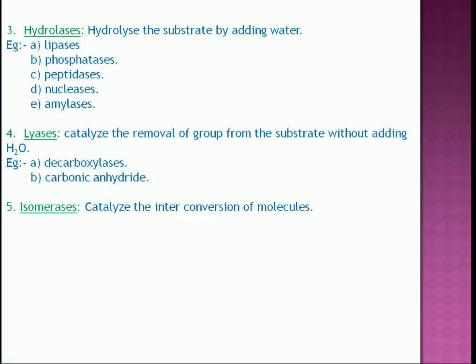Isomerases catalyze the inter-conversion of molecules from one form to another form. For example, racemases or epimerases. Epimerases transfer from one form to another form. For example, glucose and galactose are an epimeric pair with respect to the fourth carbon. Cis-trans isomerase, mutases.